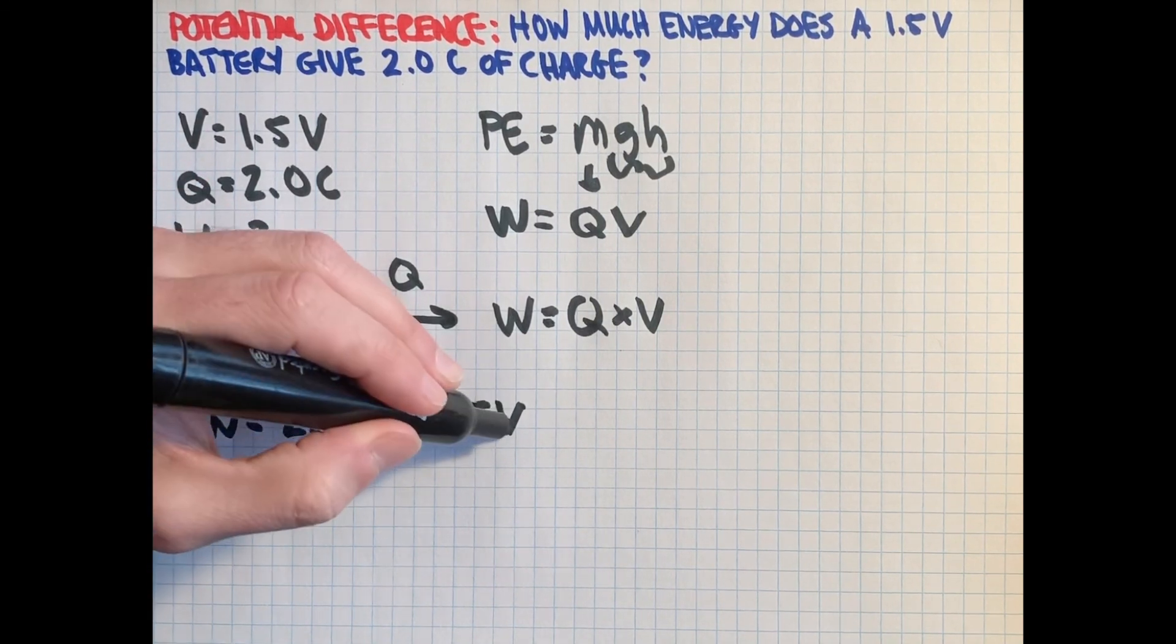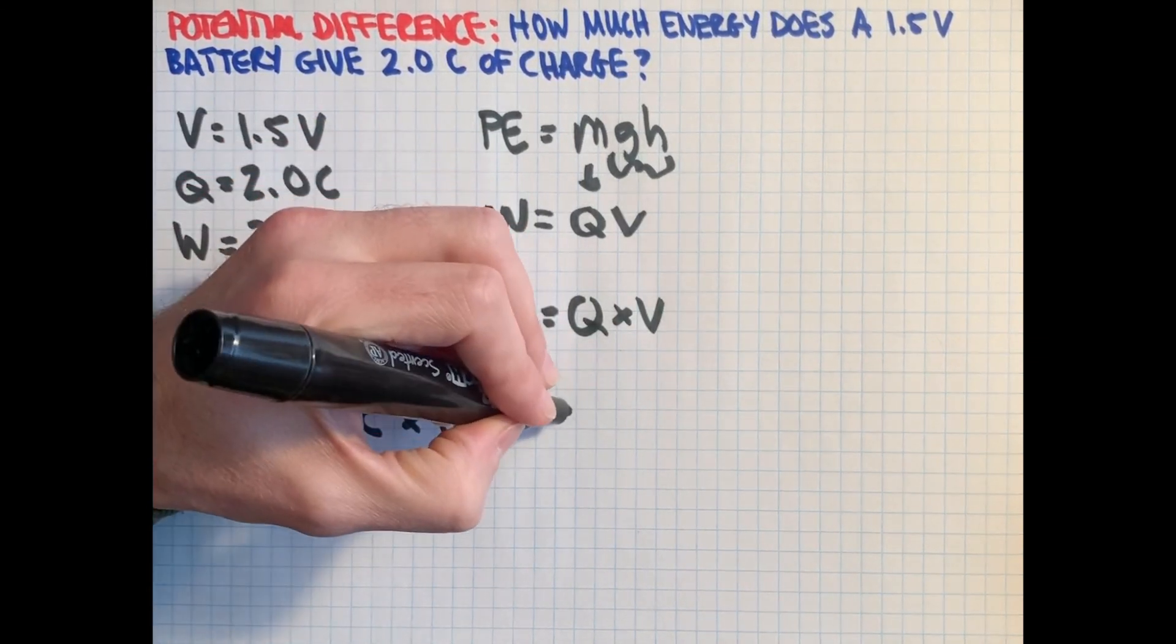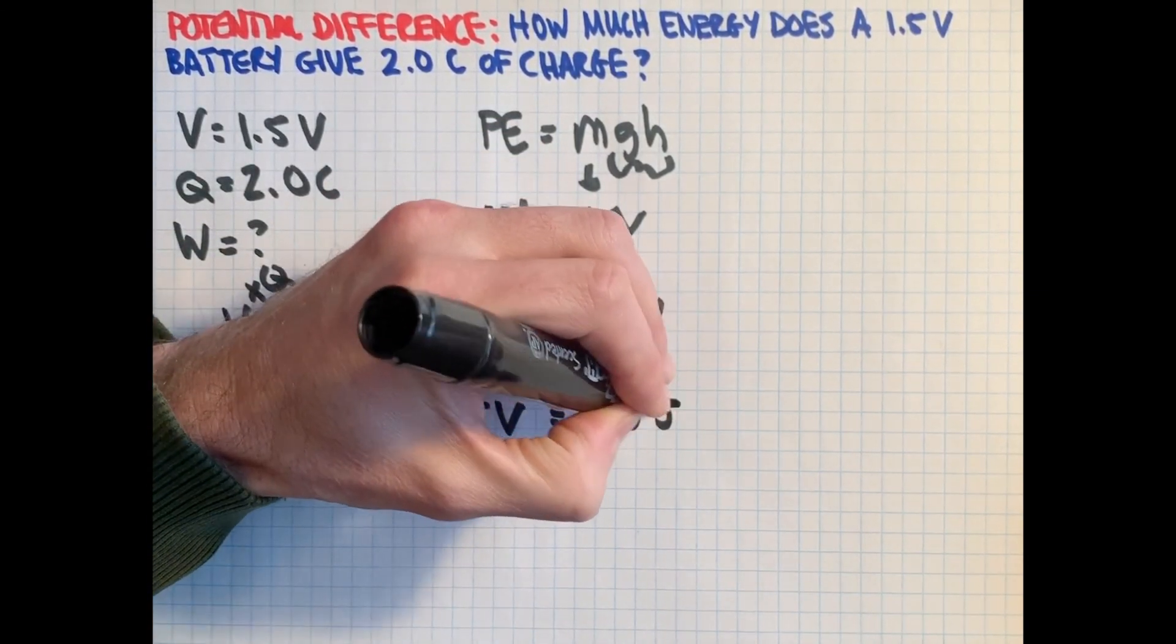So it'll be times a coulomb by a joule per coulomb. The coulombs cancel and then we're left with joules. And so we do that and we get a total of 3.0 joules.